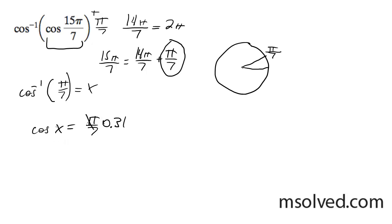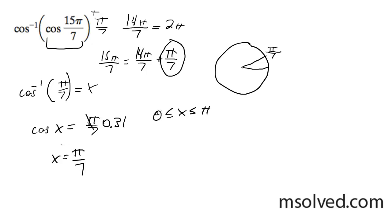The cosine of x, whatever we had in there, it's going to be that — except it's not going to be 15π over 7. It has to be between 0 and π, because those are the bounds on the inverse cosine. So in this case, it's just simply going to be π over 7 again. So the solution here is just π over 7, which is a coterminal angle. That's it.